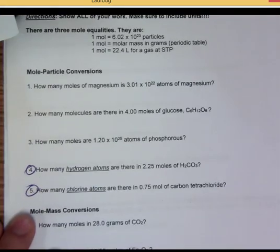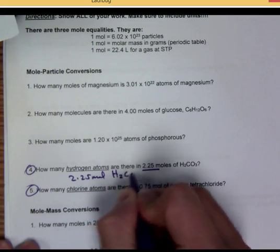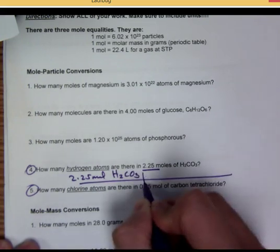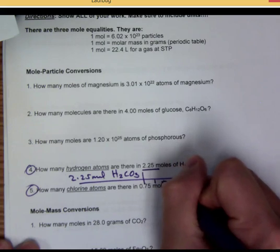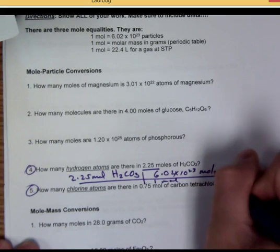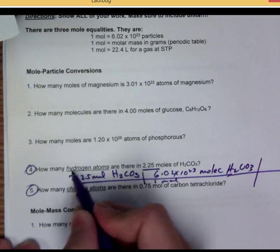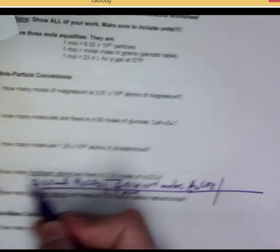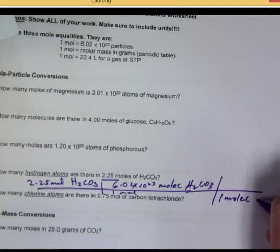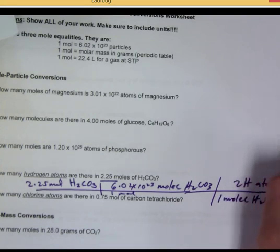Here you go. How many atoms of hydrogen? So we start 2.25 moles of H2CO3. Then we get one mole of that is 6.02 times 10 to the 23rd molecules of H2CO3. And it's asking for hydrogen atoms specifically. So we say one molecule of that. H2CO3 is how many hydrogens are there? Two hydrogen atoms. Okay? And that's how you do that one.